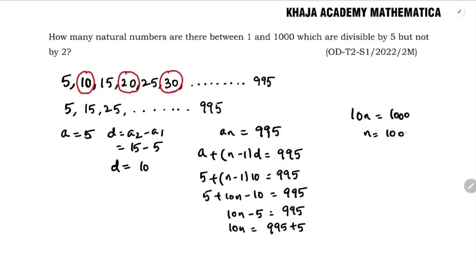So N equals 1000 by 10. So N equals 100. So there are 100 natural numbers between 1 and 1000 which are divisible by 5 but not by 2.